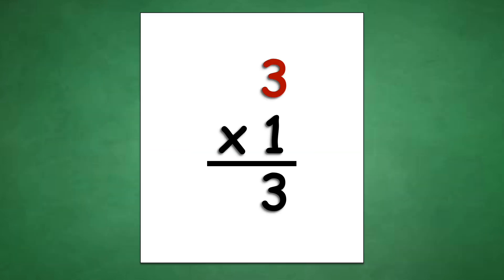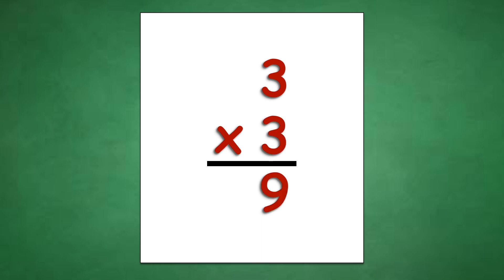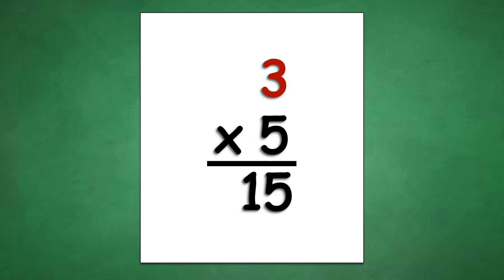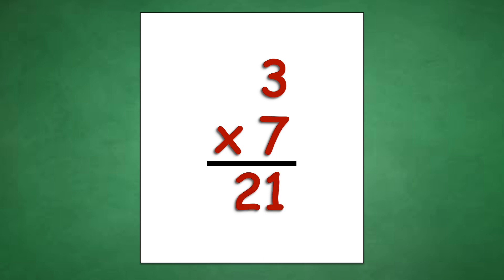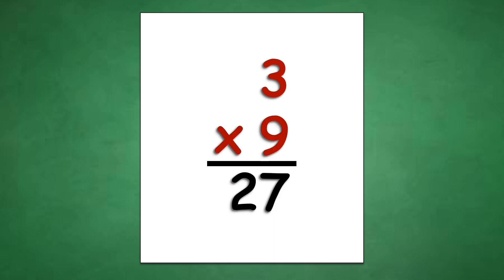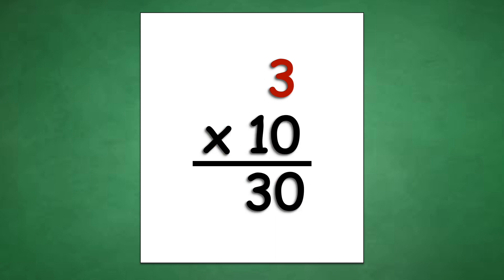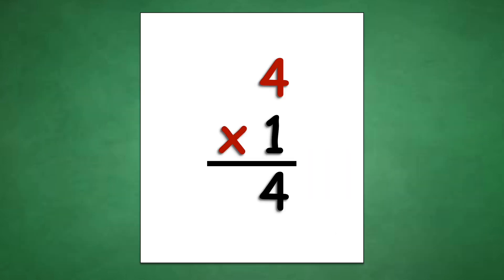Table of 3: 3 x 1 equals 3, 3 x 2 equals 6, 3 x 3 equals 9, 3 x 4 equals 12, 3 x 5 equals 15, 3 x 6 equals 18, 3 x 7 equals 21, 3 x 8 equals 24, 3 x 9 equals 27, 3 x 10 equals 30.